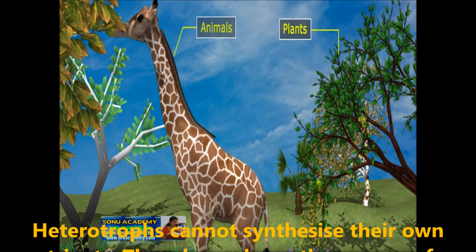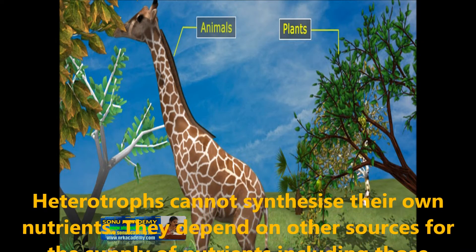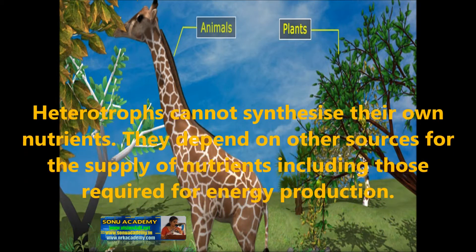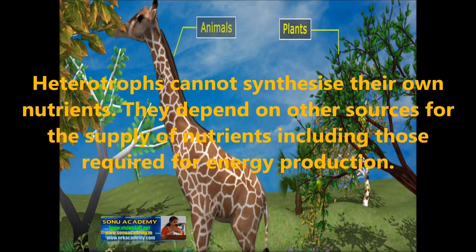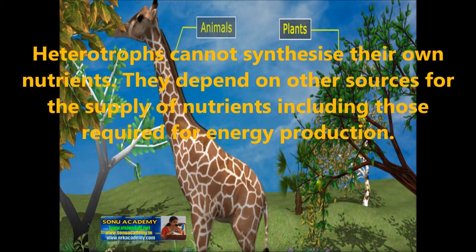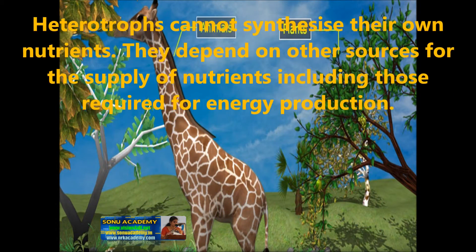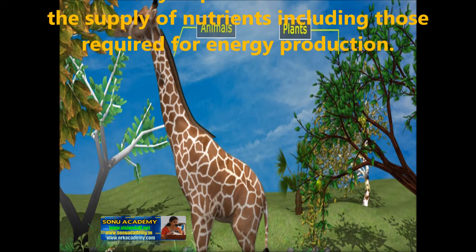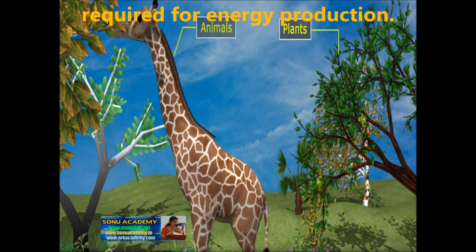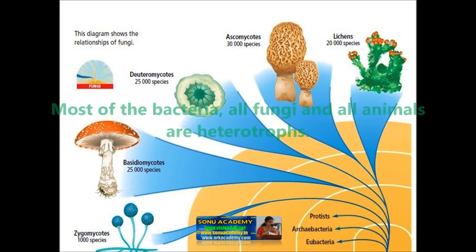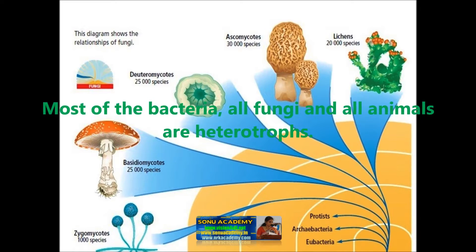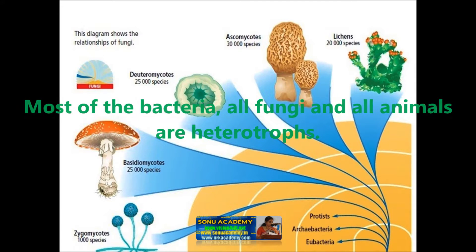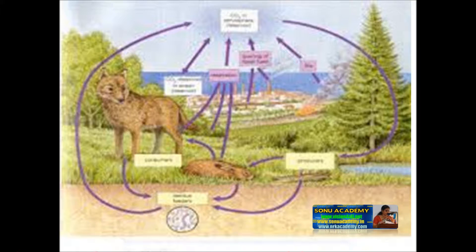Heterotrophs cannot synthesize their own nutrients. They depend on other sources for the supply of nutrients, including those required for energy production. Most bacteria, all fungi, and all animals are heterotrophs.